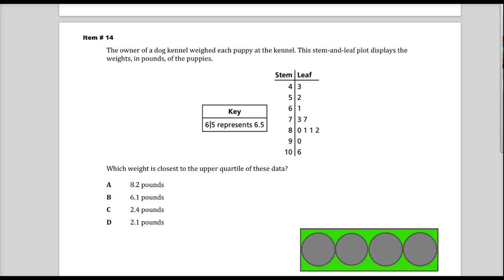This is item number 14 from the spring 2014 test release items for 7th grade TCAP math. The question says the owner of a dog kennel weighed each puppy at the kennel. This stem and leaf plot displays the weight in pounds of the puppies.